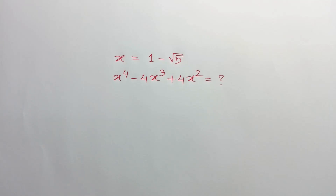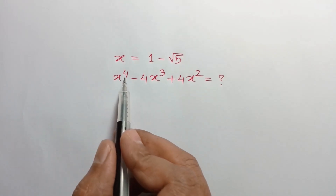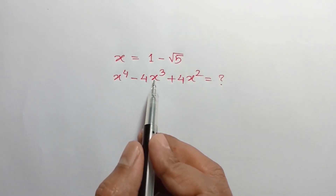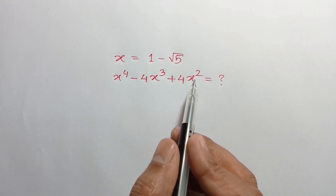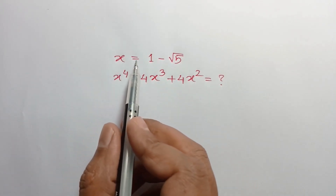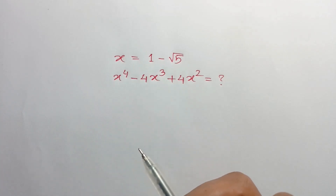Hi everyone. In this video I am going to show how to find the value of x to the power 4 minus 4x cubed plus 4x squared, where x is equal to 1 minus square root of 5.